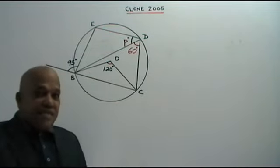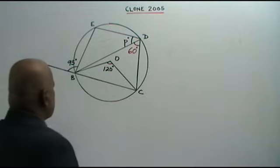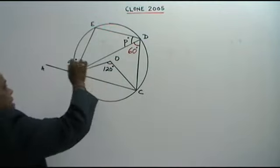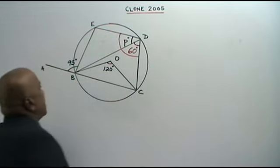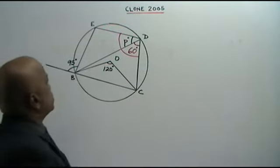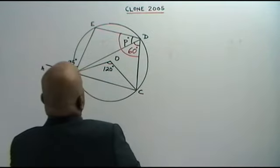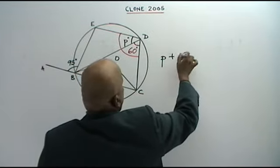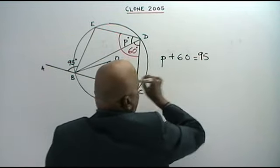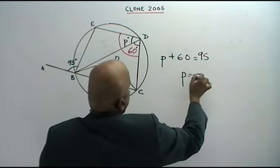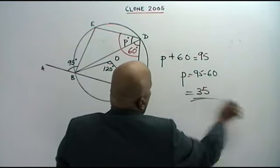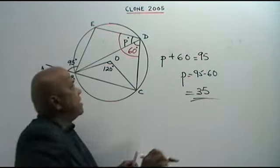Now we use another circle theorem: the exterior angle of a cyclic quadrilateral is equal to the interior opposite angle. So P plus 60 equals 95. From here, P equals 95 minus 60, which gives us 35.